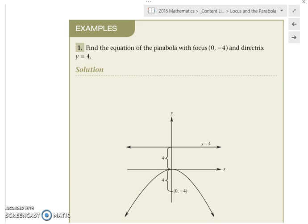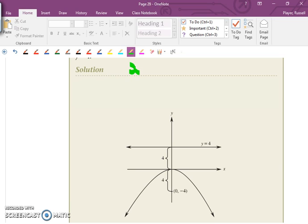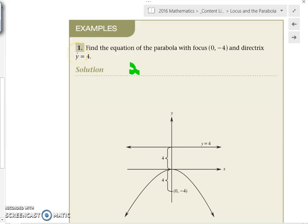Okay, so you can probably see that we're in the form x squared equals minus 4ay. When we're in this form, we're going to have (0,-a) as the focus and the directrix is going to be y equals a. So from that you should be able to go, well, okay, a equals...